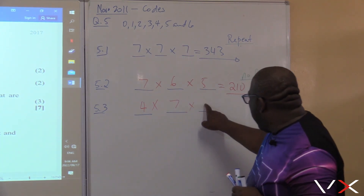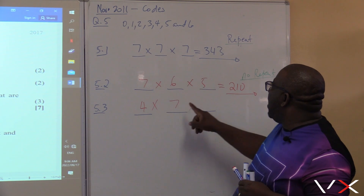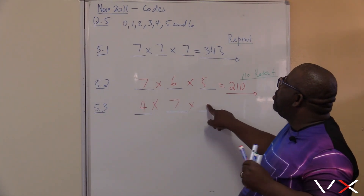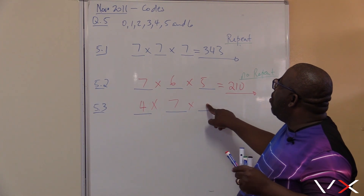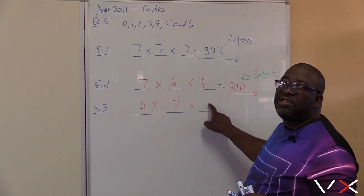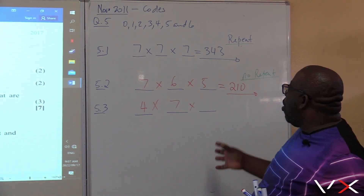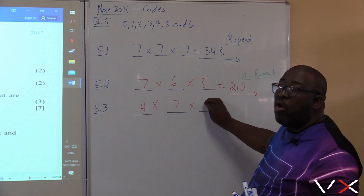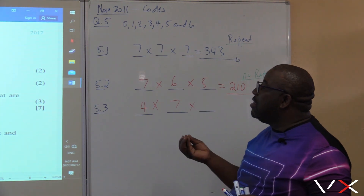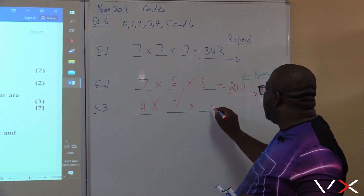If a number ends with 0, that can be divisible by five. If a number ends with 1 — no, not part of our option. 2 — no. 3 — no. 4 — no. 5 — yes. 6 — no. So how many options do we have in this last column? We've got about two — we can either have 0 or 5 here, so that it can be divisible by five.